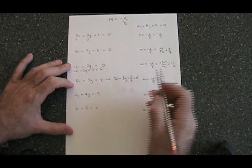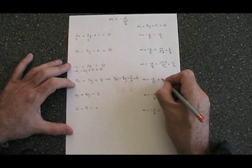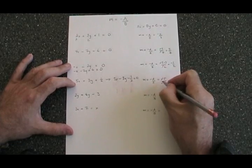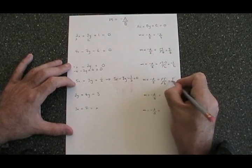My a is 5 and my b is negative 3. So I end up with negative 5 over negative 3. The two negative signs cancel and my slope is 5 thirds.